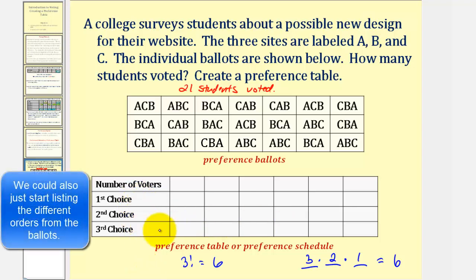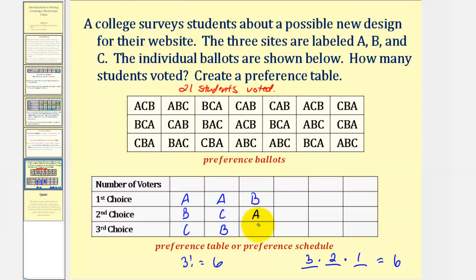Let's begin by listing the six possible orders. So if we start with A, B, C, let's now list A, C, B. Now let's start with B, so we could have B, A, C, and then B, C, A. And now we'll start with C, we could have C, A, B, and then C, B, A.